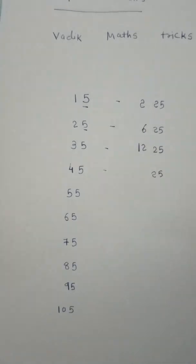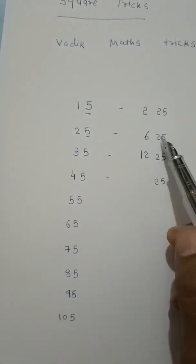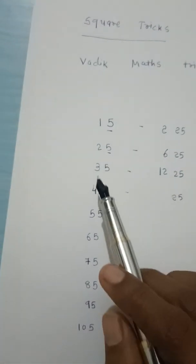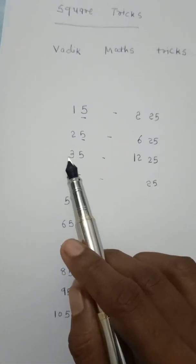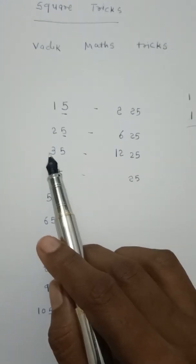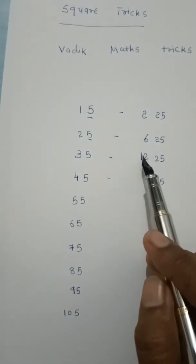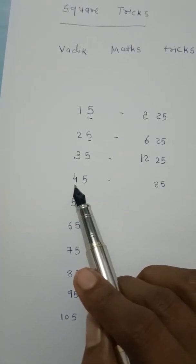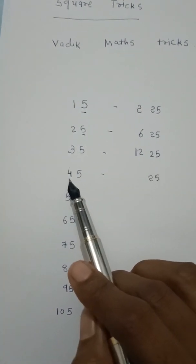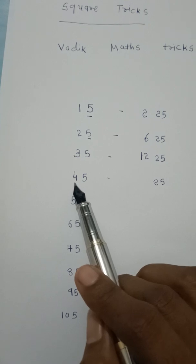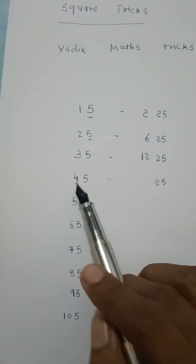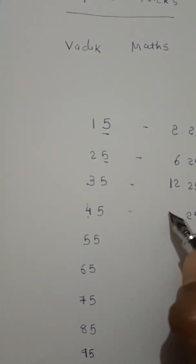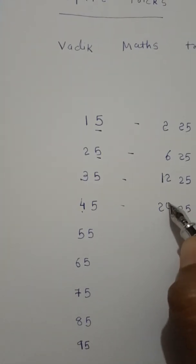Here the first digit is 2. Add 1: 3. So 2 into 3 is 6. Answer is 625. Here the number is 3. Add 1: 4. So 3 into 4 is 12. Answer is 1225. Here the number is 4. Add 1: 5. So 4 into 5 is 20. Answer is 2025.